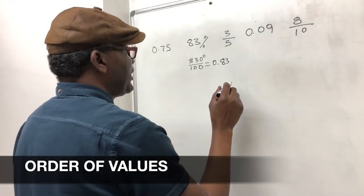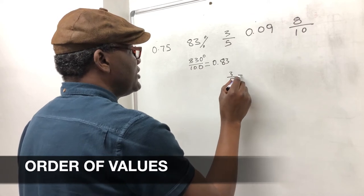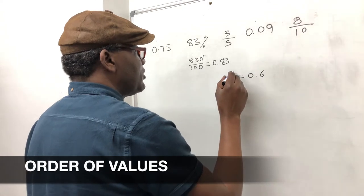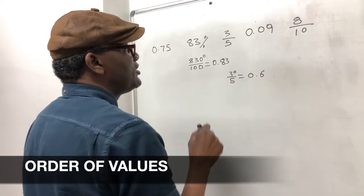Three over five. Again, three over five is equal to 0.6 because five into three it doesn't go, five into 30 goes six.